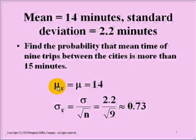In this sampling distribution, our mean is still 14, but our standard deviation of a sample is divided by the square root of the number in that sample. So rather than using 2.2 as our standard deviation, we divide 2.2 by the square root of 9, since there were nine trips, and we have a standard deviation of 0.73.